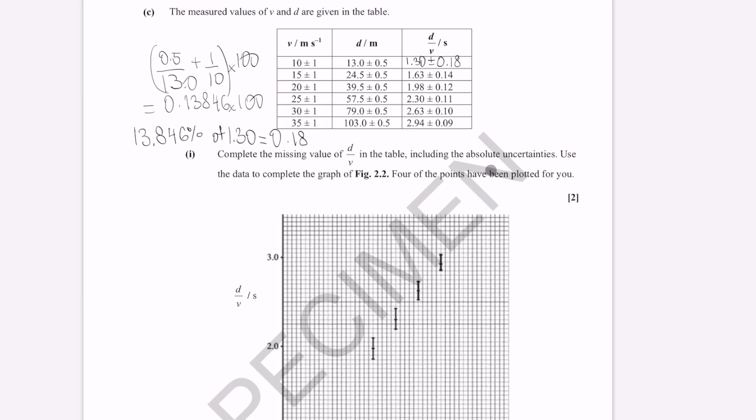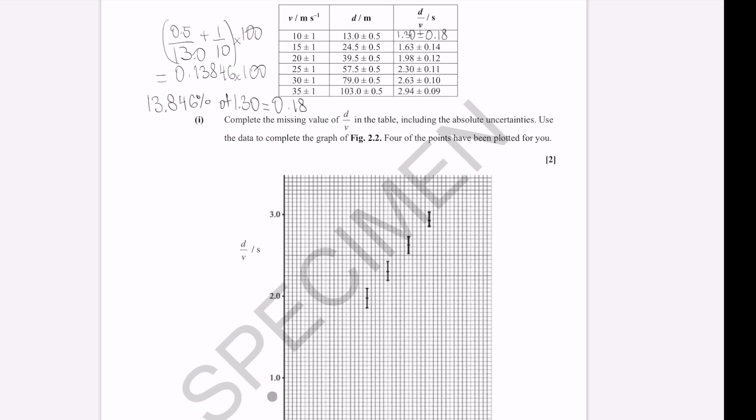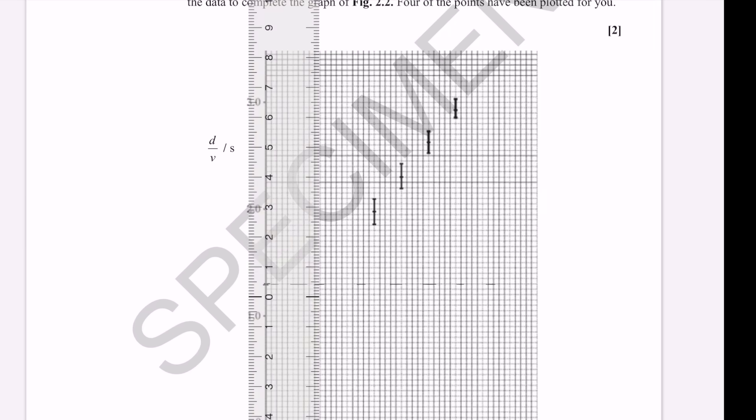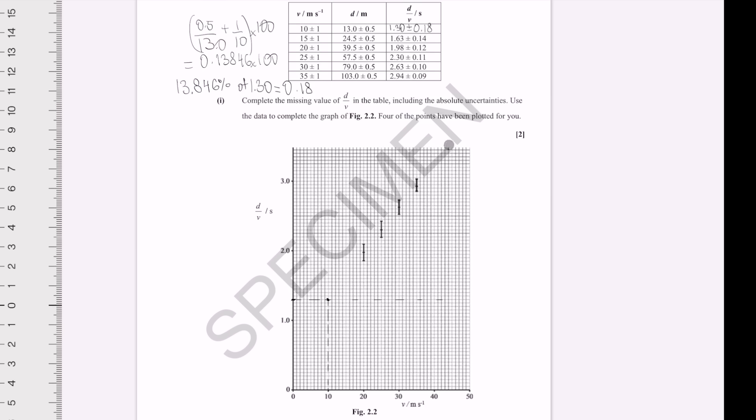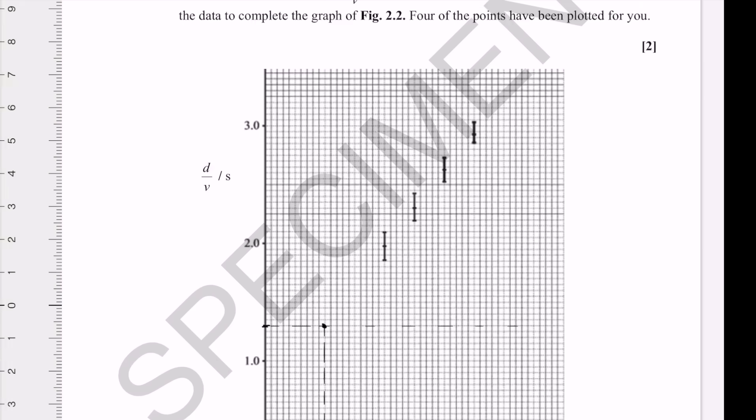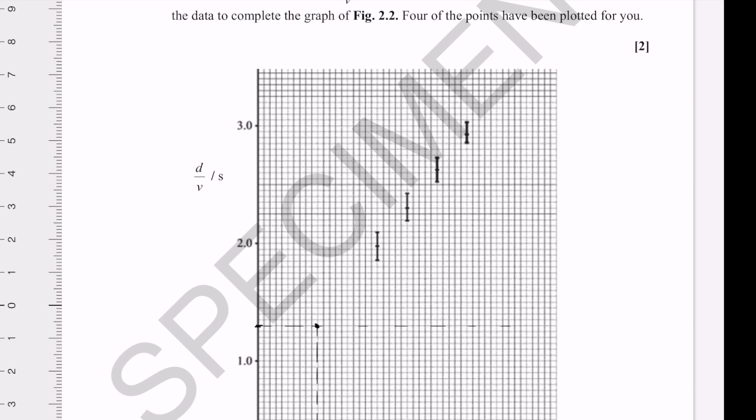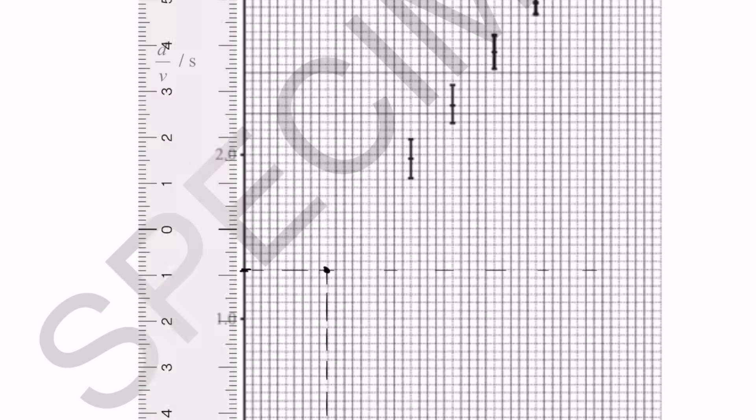Complete the missing value of d over v in the table. Include the absolute uncertainties. And we're going to do that with the use of an error bar. So d over v should be equal to 1.30. This here is our point with coordinates of d over v being 1.30 and v being 10. Now, what we need to plot is the uncertainty as well. We know that the uncertainty in d over v is 0.18. So, we need to apply an appropriate error bar. The length of one square was 0.05. So, that means that the total length is going to be just under two error bars in either direction. Something like this.